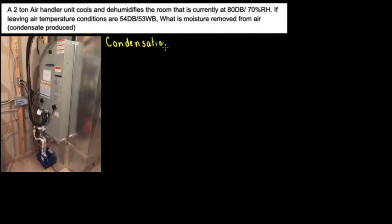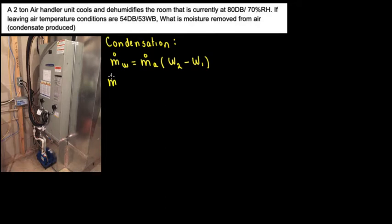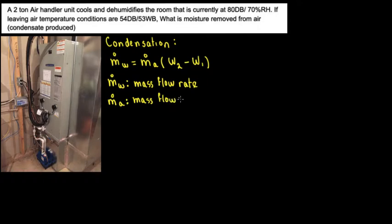Condensation: the mass flow rate of water is going to be equal to the mass flow rate of air times the humidity ratios — humidity ratio 2 minus humidity ratio 1. So let's go over what everything is. This is mass flow rate, and the other one is going to be the mass flow rate of air.